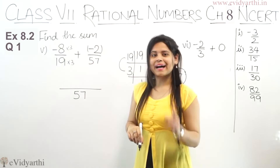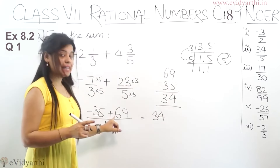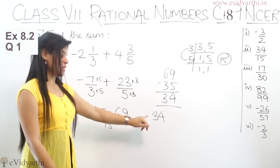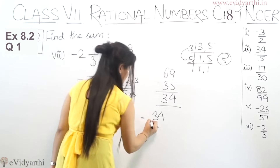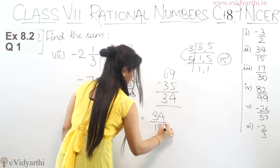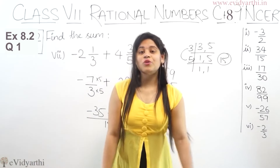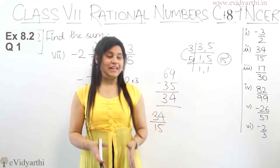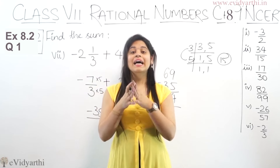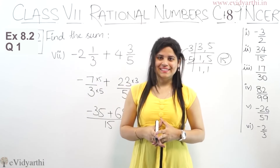The sign is positive because the bigger number is 69 and it has a plus sign. So we get 34 upon 15. Wait — the answer is 34 upon 15. Actually the instructor writes 34 upon 50, but the correct denominator is 15. So the answer is 34 upon 15, and this was the last part of Question number 1. Now let's come to the next question.